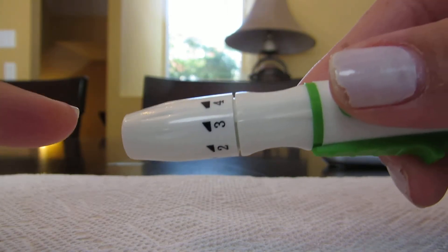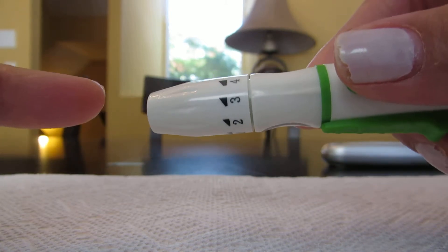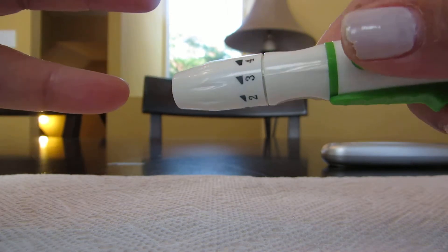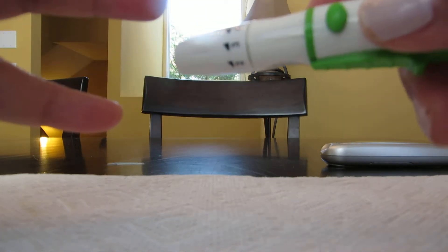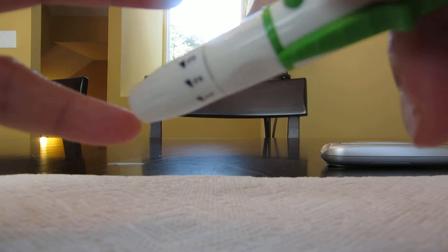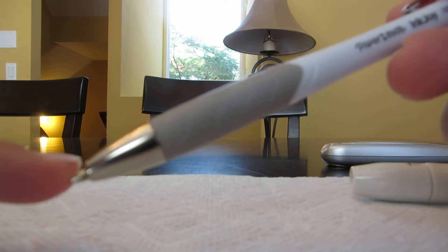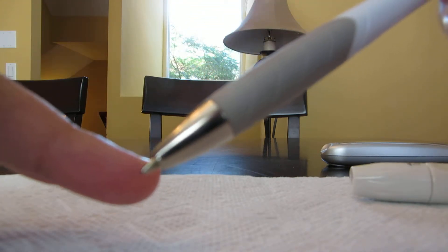You could prick your fingers in many areas. The best way is really on the sides of the fingers—either this side of the pinky, which is popular, or the other side, or the ring finger on the sides.